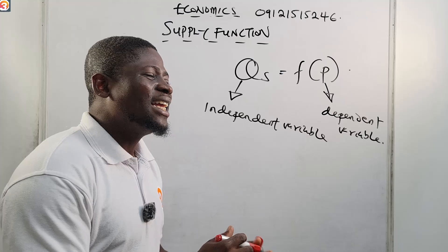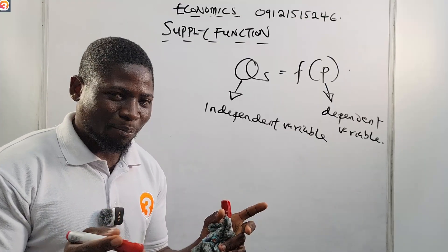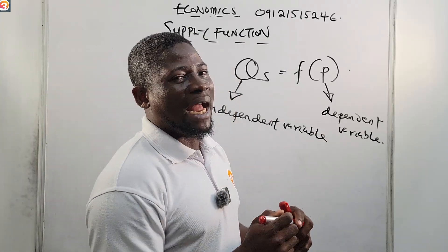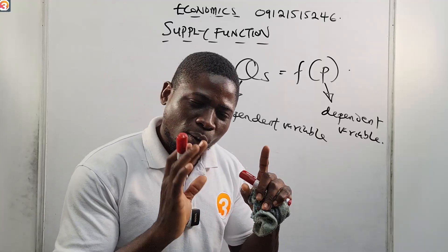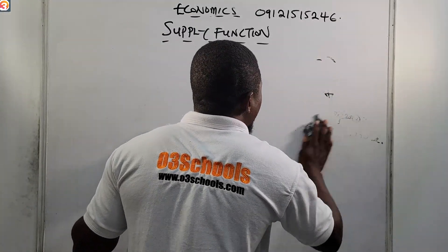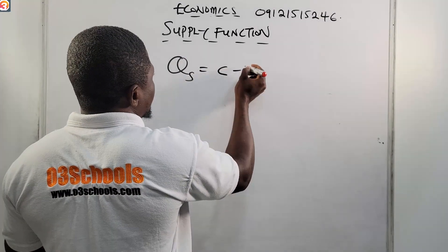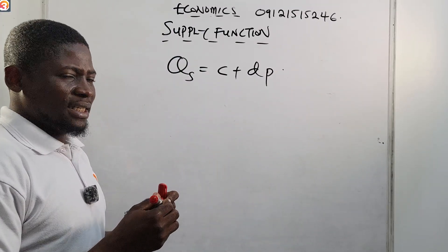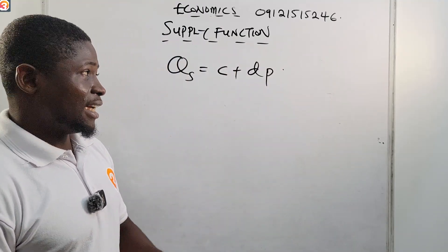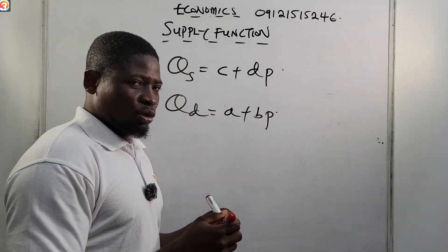The price is the dependent variable; the quantity supplied is the independent variable, because the quantity supplied is a function of the price. According to the law of supply, it is the price that determines the quantity supplied. Higher the price of a commodity, the higher the quantity supplied; the lower the price, the lower the quantity supplied. So the supply function is given by QS equals c plus dP — this is almost similar in form to the demand function, which uses a plus bP.